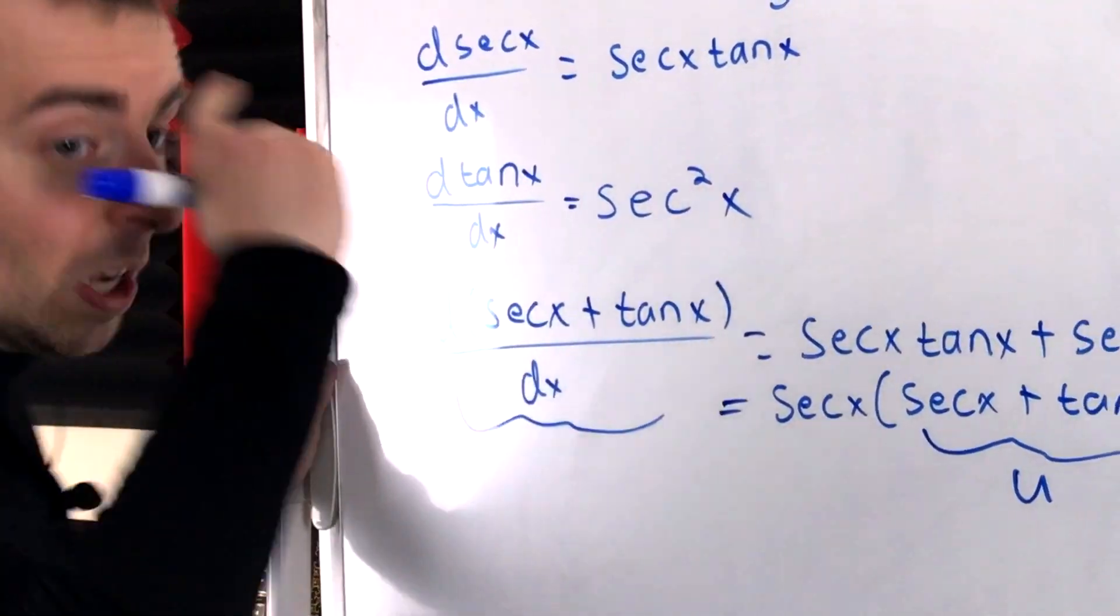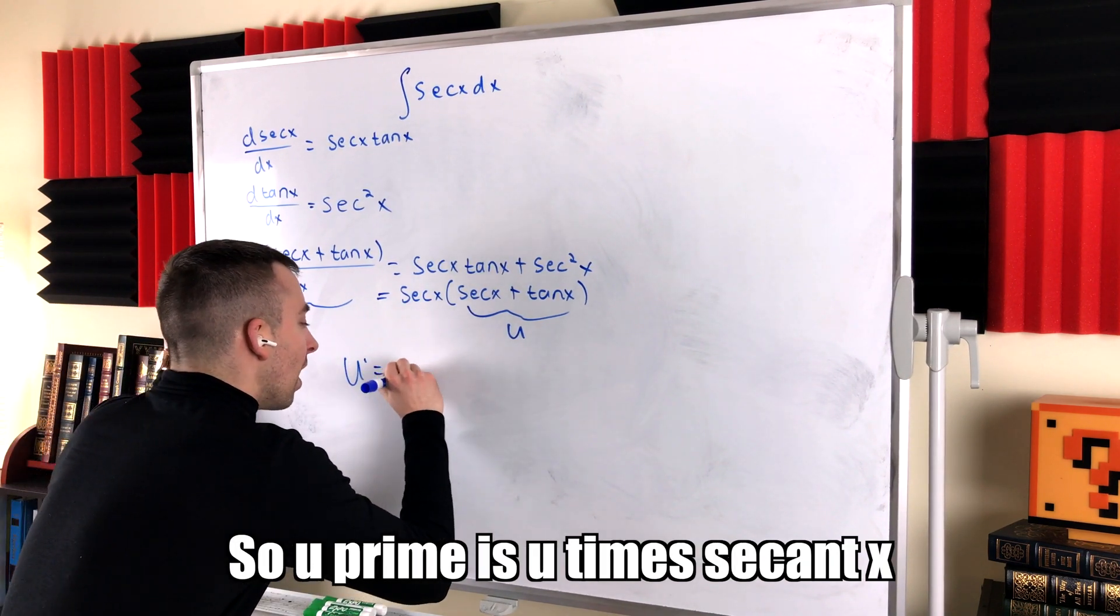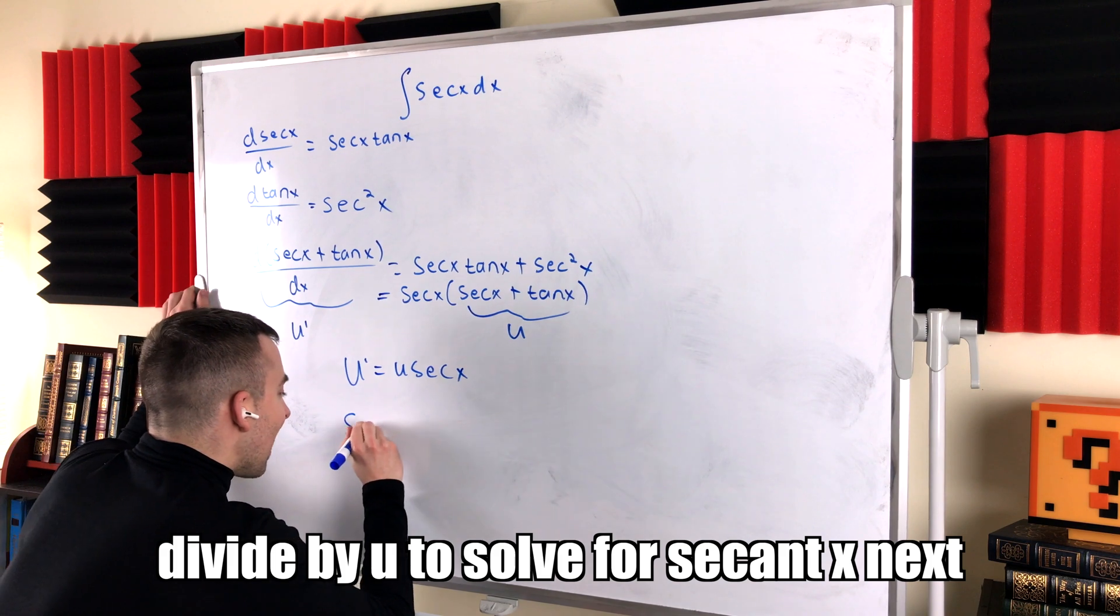Speaking of things to spare, I hope we've got time. Let's save some and call the derivative of u, u prime. So u prime is u times secant x. Divide by u to solve for secant x next.